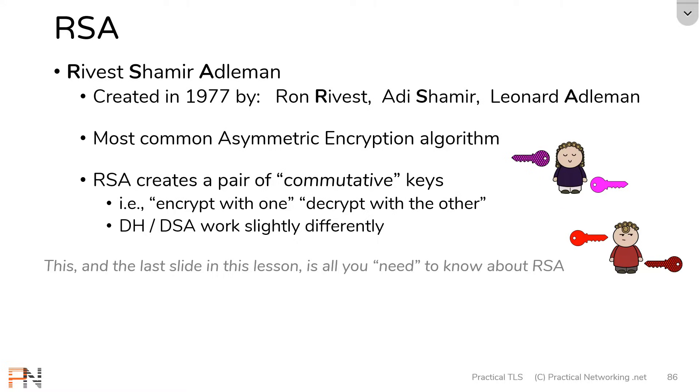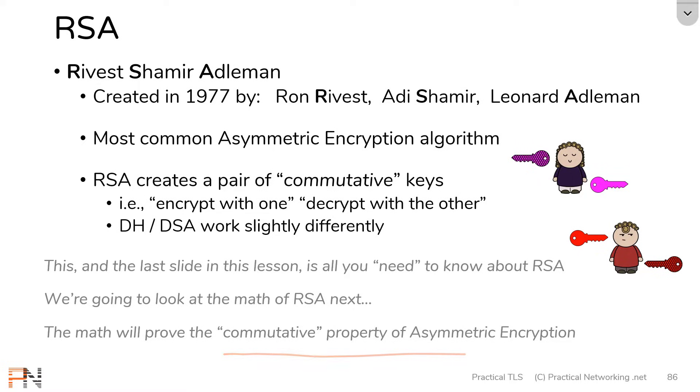This slide and the last slide in this particular lesson is all you really need to know about RSA. What we're about to do next is going to go into the math of the RSA algorithm. The purpose of this is to prove the commutative property of asymmetric encryption. At no time will you ever have to manually redo the math to make sure a particular server did it correctly. The only purpose of showing you the math is to prove this behavior. If you're anything like me, you were probably told at one point that asymmetric encryption allows you to encrypt with the public key and decrypt with the private key and so on. But it didn't actually click for me until I saw the math.